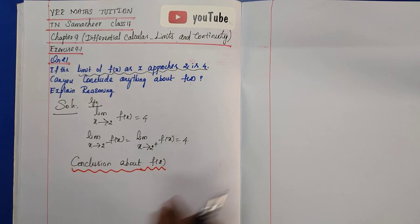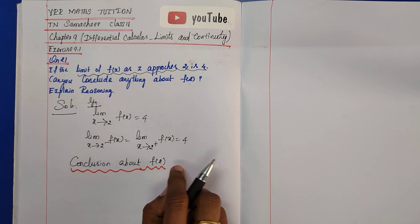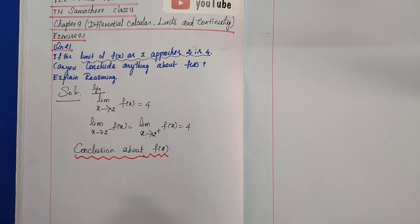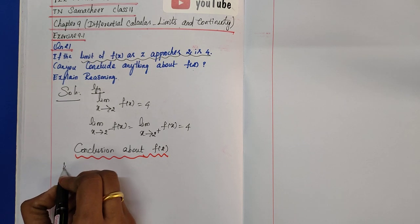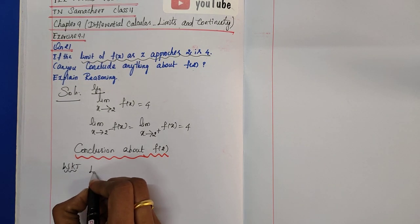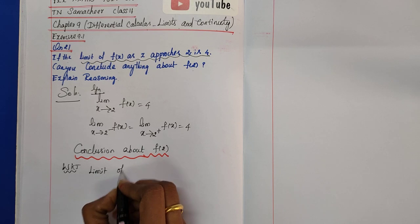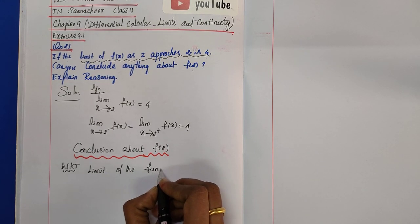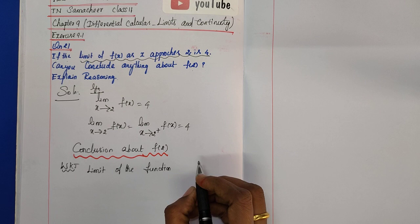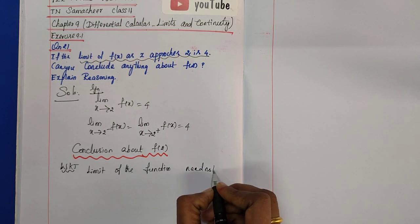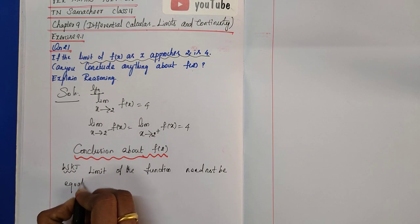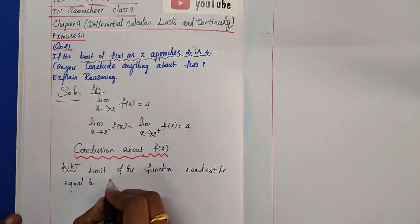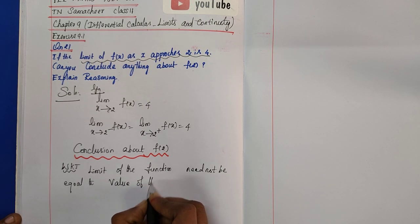We know one important result: the limit value of a function and the function value are not necessarily equal. That is, the limit of a function need not be equal to the value of the function at that point.